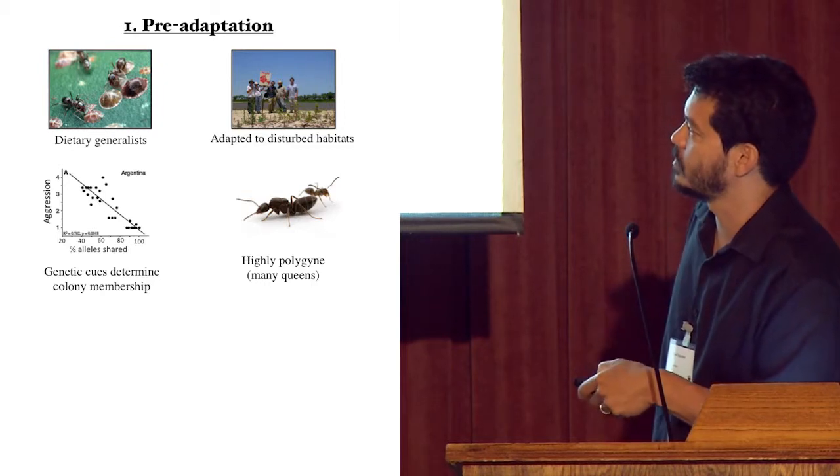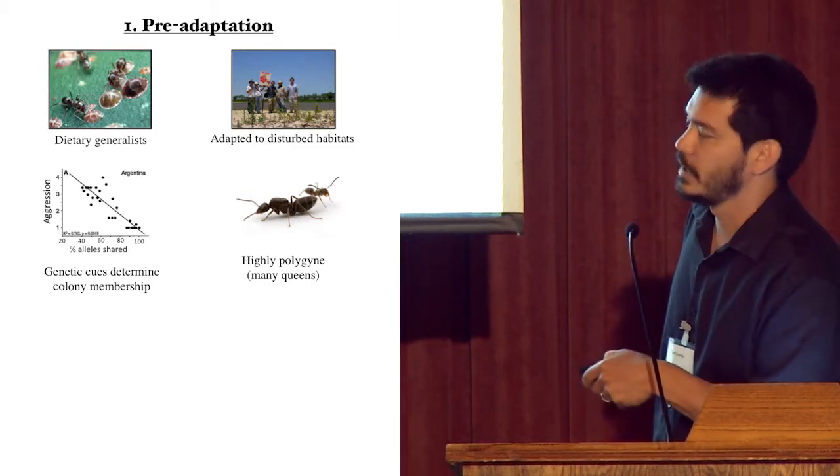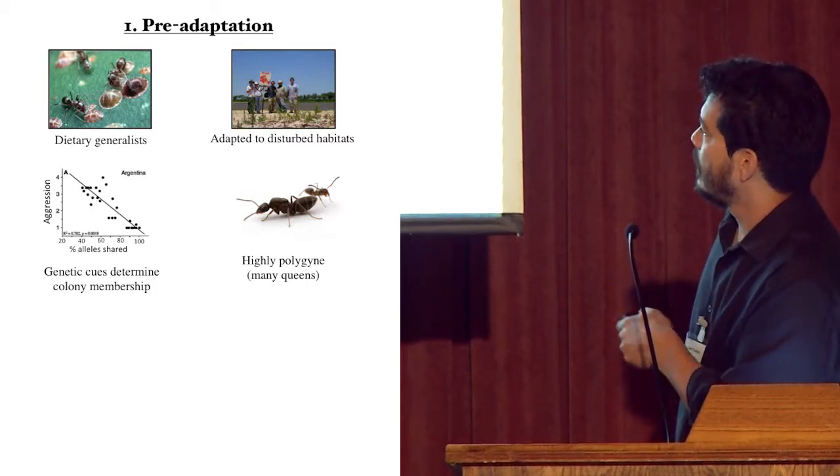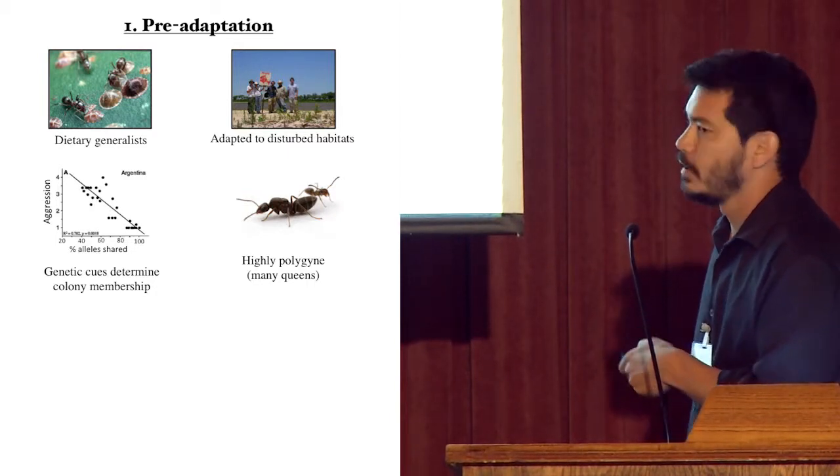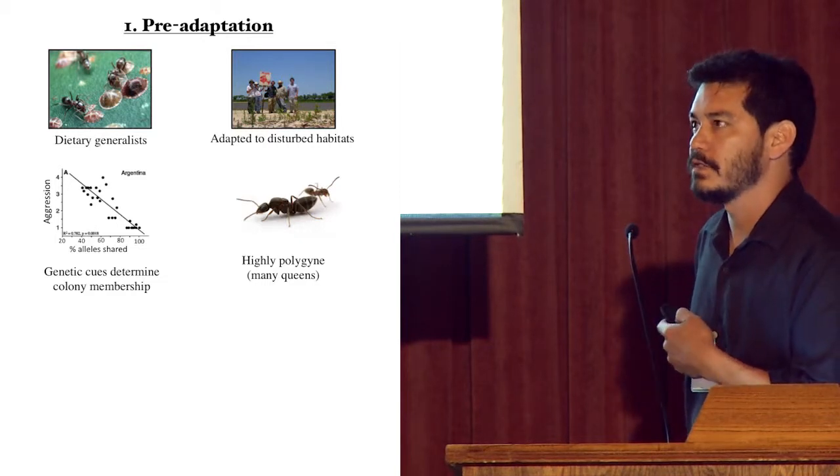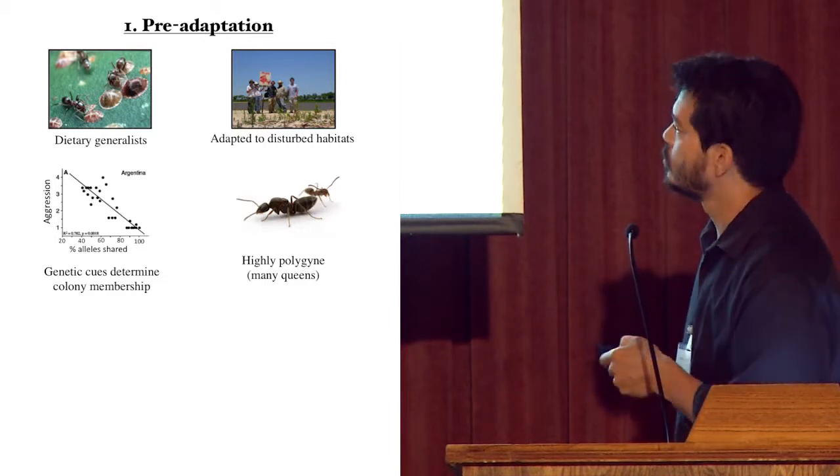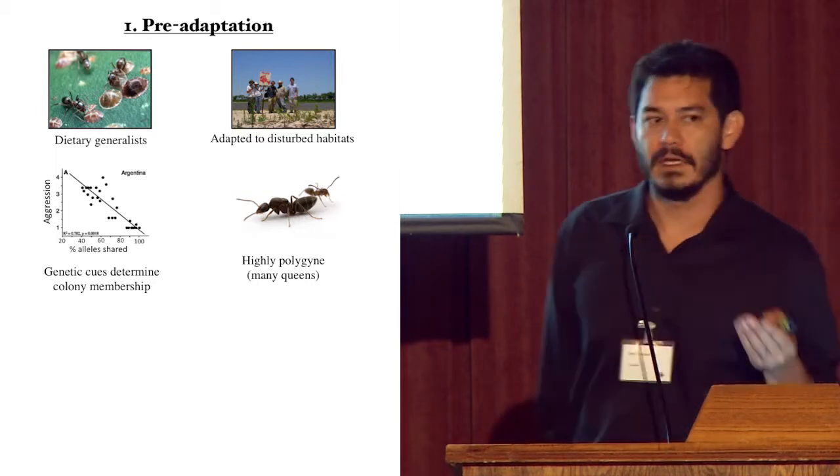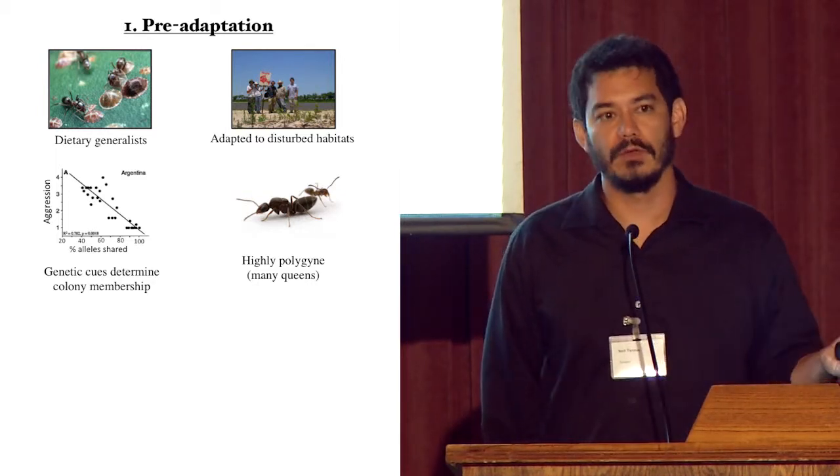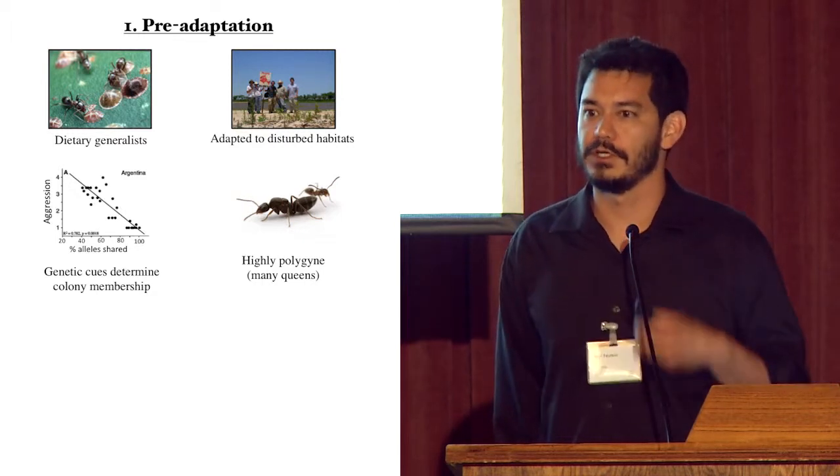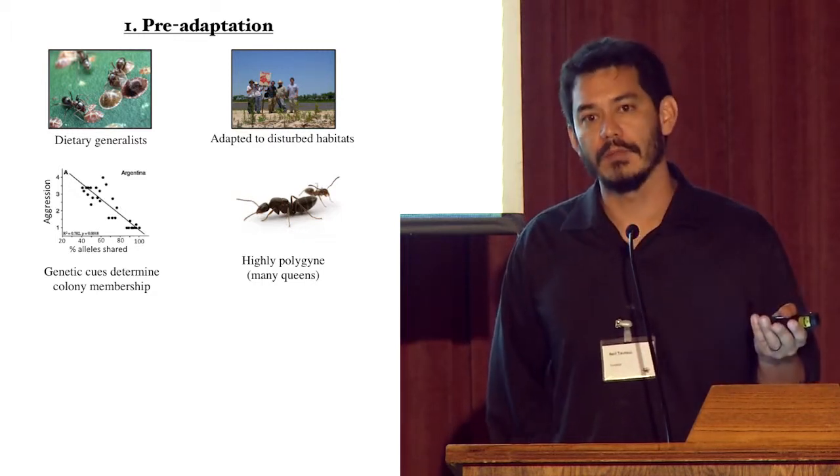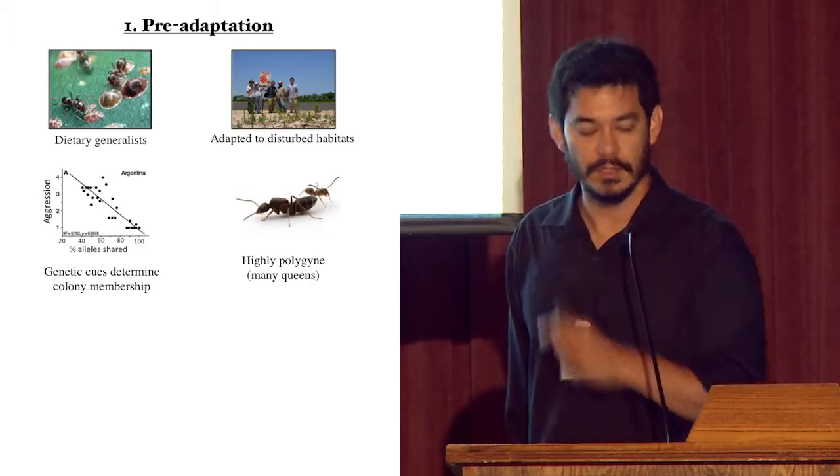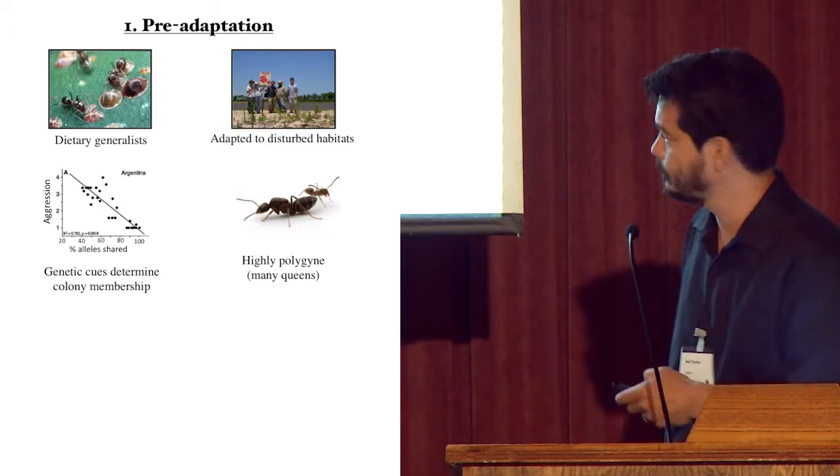They use genetic cues to determine colony membership. This is something that I'll talk about in the end. I think many of you have probably heard me talk about this before, about the role of genetics in the colony structure of Argentine ants and how that plays into their success. And they're highly polygyne, which I would say is slightly unusual for ants, but not incredibly rare. This means that within an individual colony, there are many, many reproductive queens. So if some random propagule of ants is picked up in a shovel full of dirt or in a plant that's moved, there's a high probability that that's going to be a viable propagule because it's going to contain reproductive individuals that will be introduced to the new habitat.